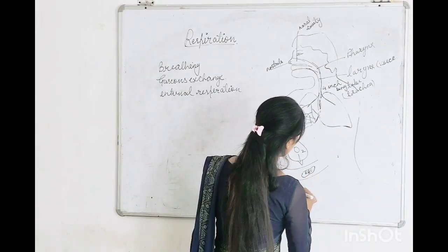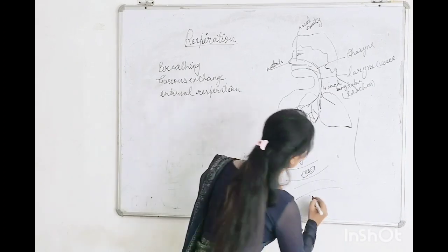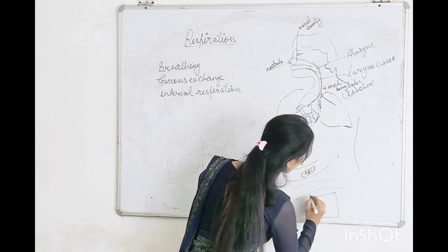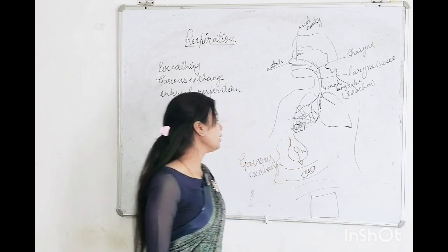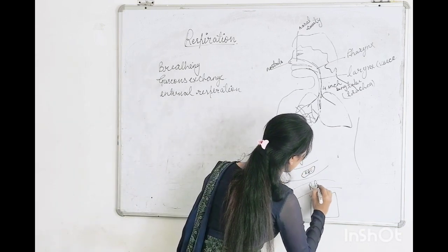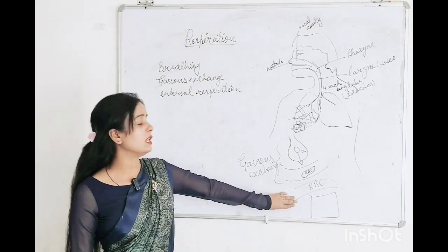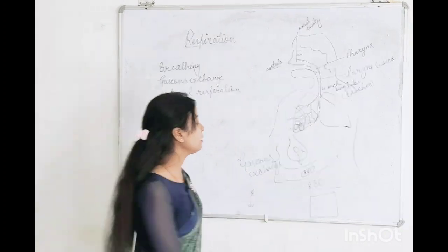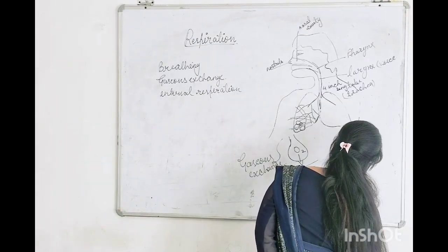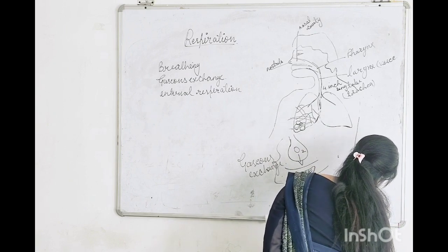From blood vessels, it passes into the next blood vessels and then into the cell. Inside the cell, internal respiration takes place.